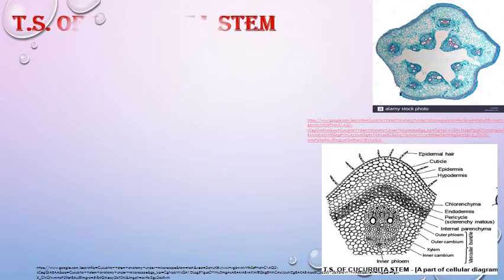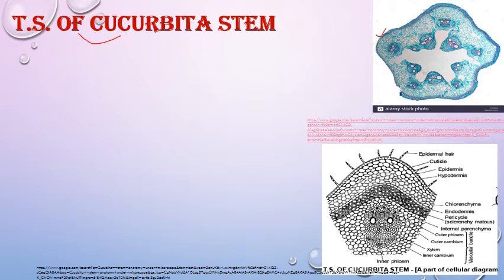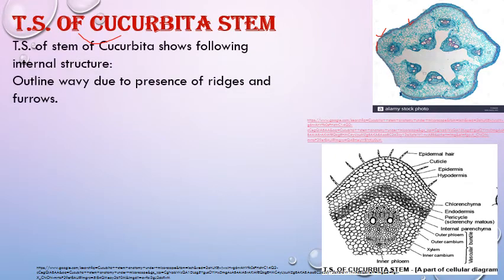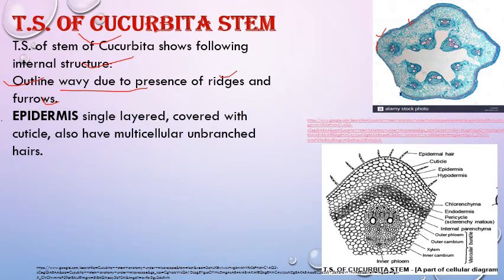Next is the TS of Cucurbita stem. The outline of the Cucurbita stem is not circular — it is wavy. This wavy region is divided into ridges and furrows. Other structures are almost similar. The epidermis is a single layer; stem hairs are also present. The outline is wavy due to the presence of ridges and furrows. The epidermis is single-layered, covered with cuticle, and has multicellular unbranched hairs — similar to sunflower stem.